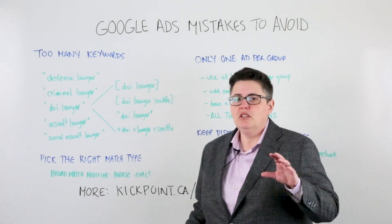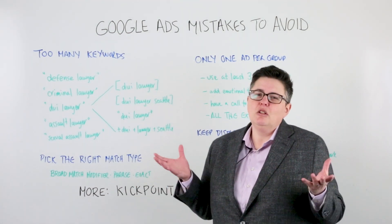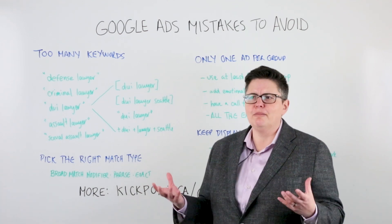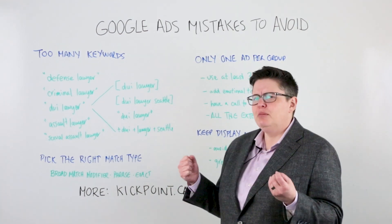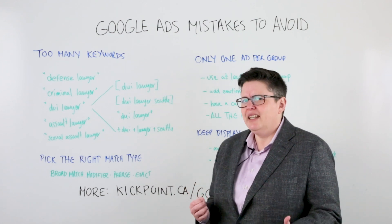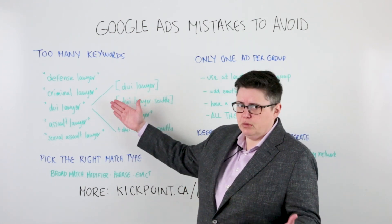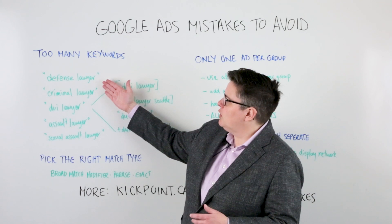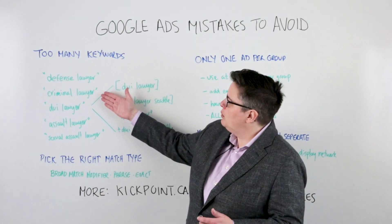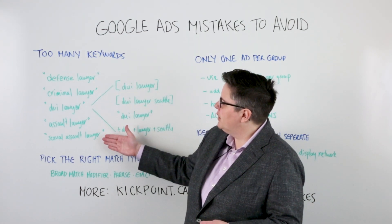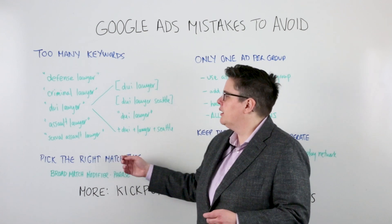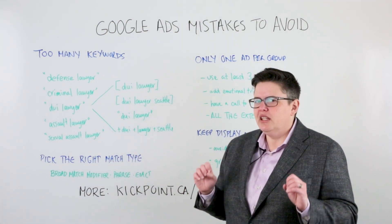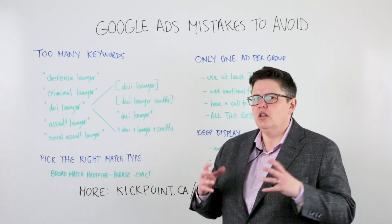The first thing is too many keywords. We see this a lot where people put together keywords that have the same sort of theme, but your theme could be really specific or kind of vague. Here's a real example we got where the keywords were all lawyer-themed: defense lawyer, criminal lawyer, DUI lawyer, assault lawyer, sexual assault lawyer.